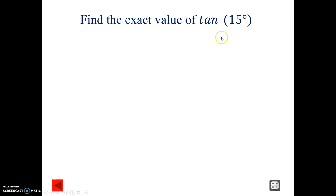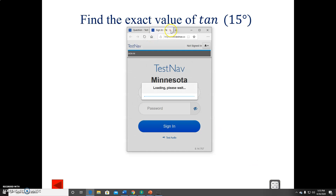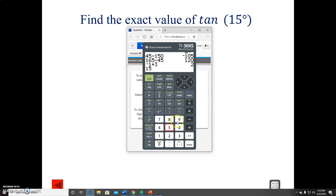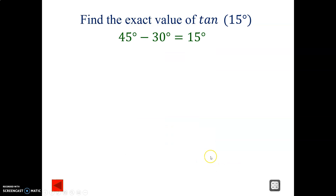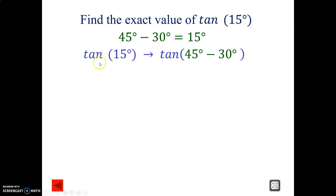So we're trying to find a couple values that either add or subtract to get us 15. By applying the 45 rule, 45 minus 30 gives us 15. So that's the numbers we'll be using — 45 minus 30 equals 15. Our new problem is now tangent of (45 degrees minus 30 degrees).